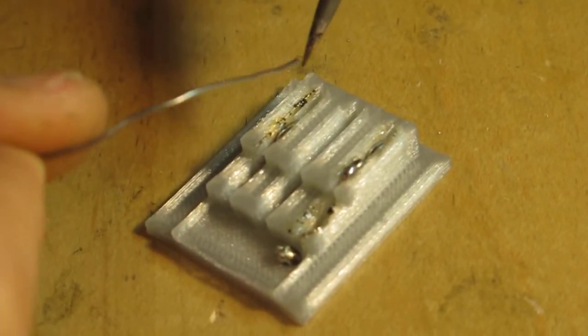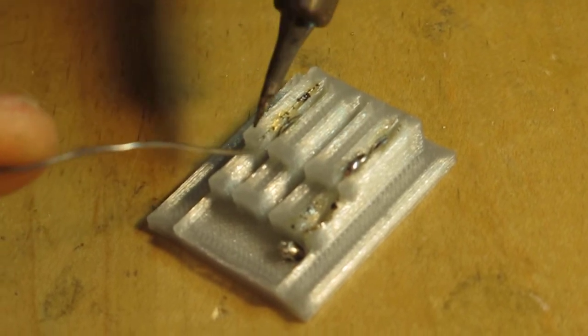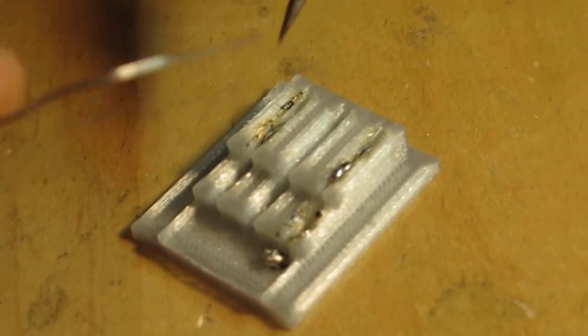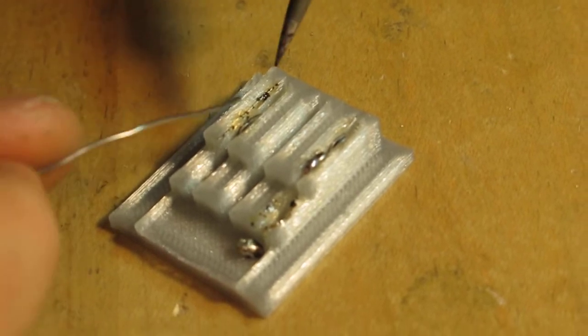This seems to get drawn in easier when it's touching existing solder. So maybe starting it on an easy to get to area and then using that to draw the surface tension of the solder down into the cavity.